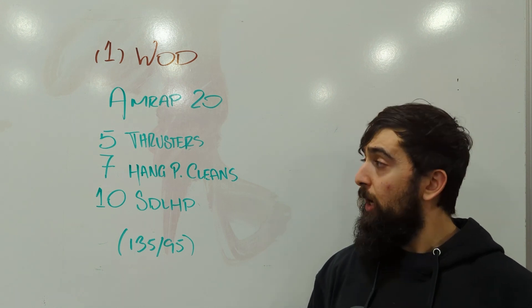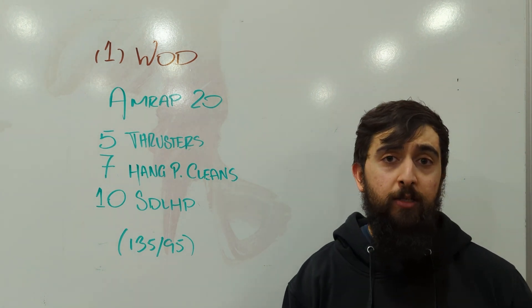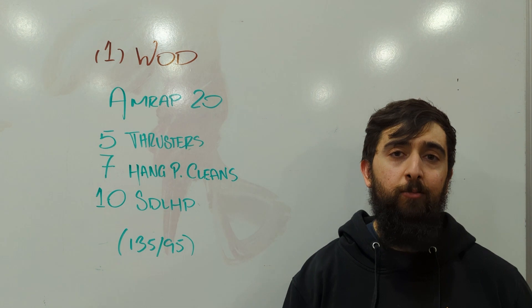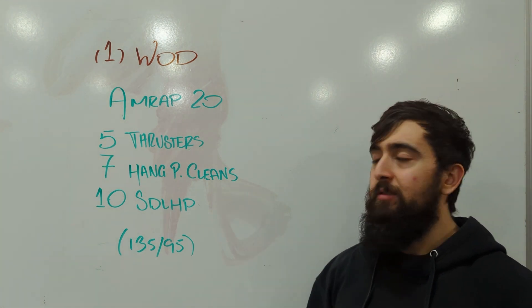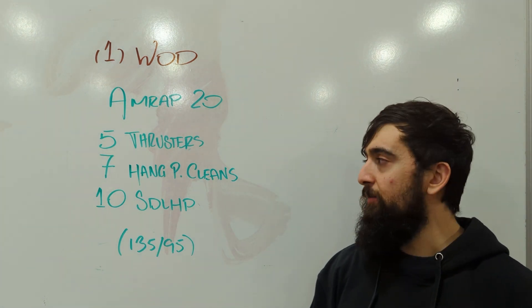We want to be moving well with our techniques, with that thruster, ideally trying to do this unbroken each time we pick it up. We don't want to do extra cleans when we do this because we already have some hang power cleans as we do our seven reps here.